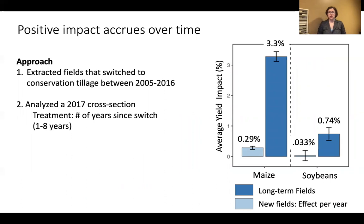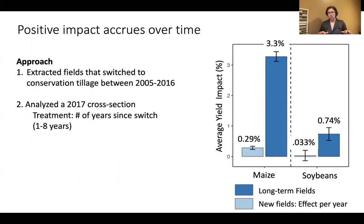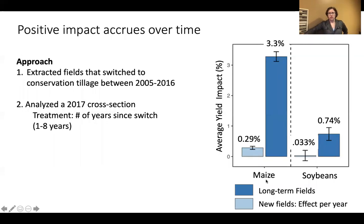We also found that this positive impact accrues over time, similar to the global literature review. We took fields that switched practice once during the time period and looked at a 2017 cross-section of yields, where each field had a treatment number of years since switching. The 3.3% is the treatment effect for long-term fields, whereas the effect for newly switched fields was much lower. The effect grows stronger over time as soil rebounds and farmers improve management practices.